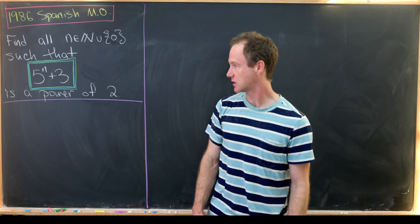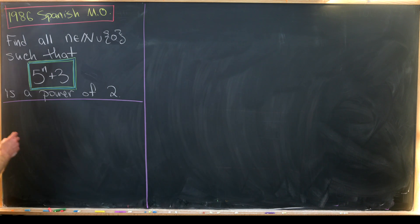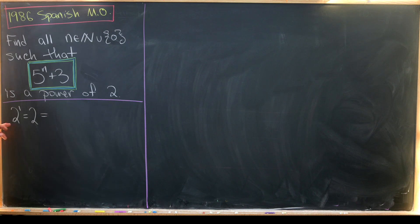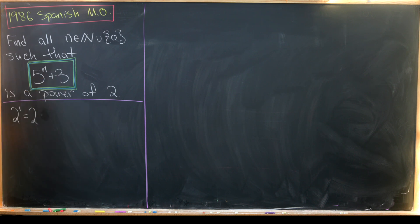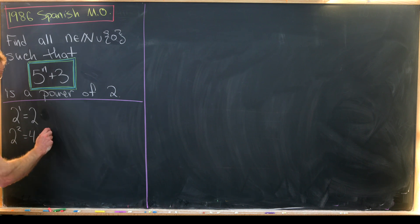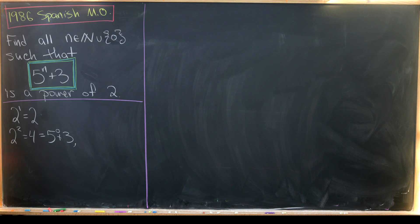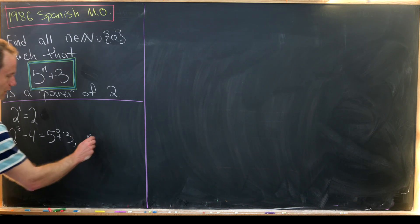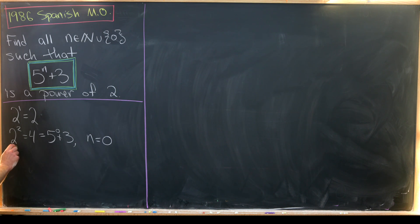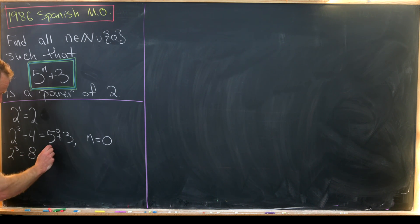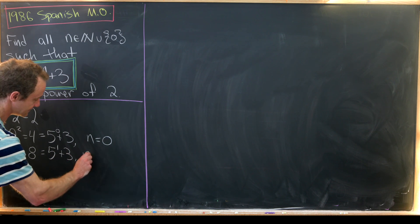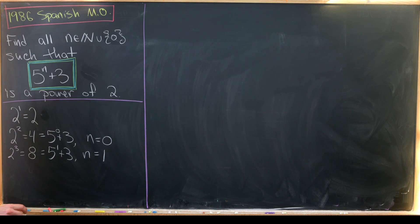Let's start by looking for powers of two. Two to the one is obviously equal to two, but two cannot be written in the form five to the n plus three, because five to the n plus three is at least one plus three, which is four. Now two squared is four, but that's five to the zero plus three. So this gives us the solution n equals zero. Two cubed is equal to eight, and that's five to the one plus three. So n equals one also gives us a solution.